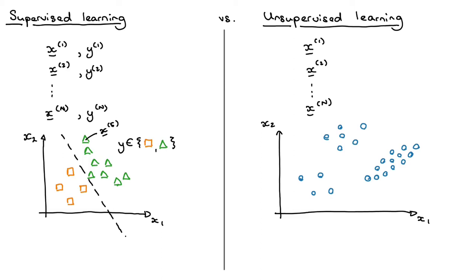It's a really powerful idea because a lot of the time we have access to way more data without labels than with labels. But it's also super challenging because it's sometimes quite ill-defined exactly what you're looking for. In supervised learning, we know exactly that the goal is to classify things as orange squares or green triangles. But in unsupervised learning, when you get a data set like this, it's much harder to see exactly what the goal is. Nevertheless, we'll look at two specific examples of unsupervised learning tasks, which I'm introducing at a high level in this video, with more detail in follow-up videos.